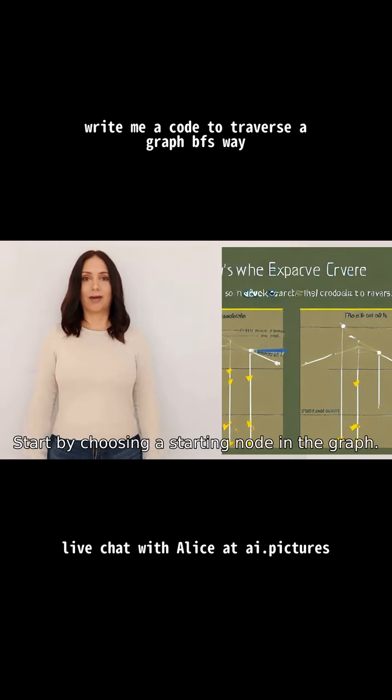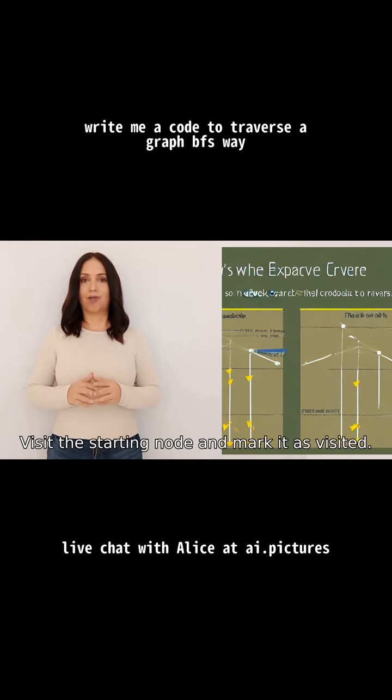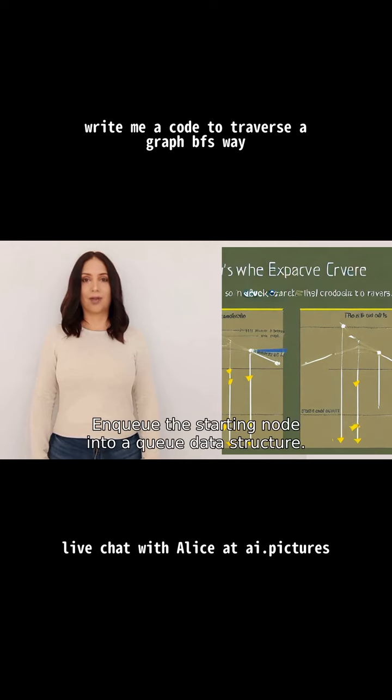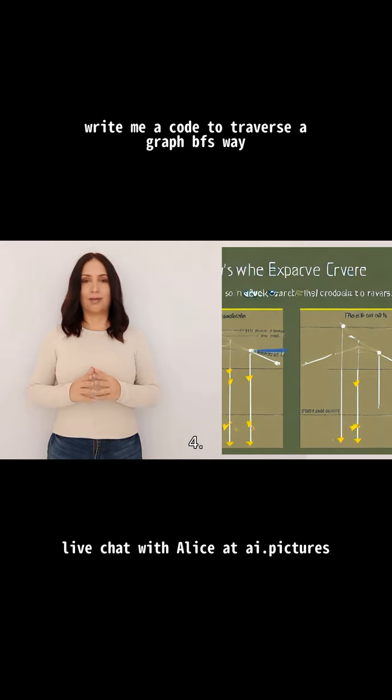Step 1: Start by choosing a starting node in the graph. Step 2: Visit the starting node and mark it as visited. Step 3: Enqueue the starting node into a queue data structure.